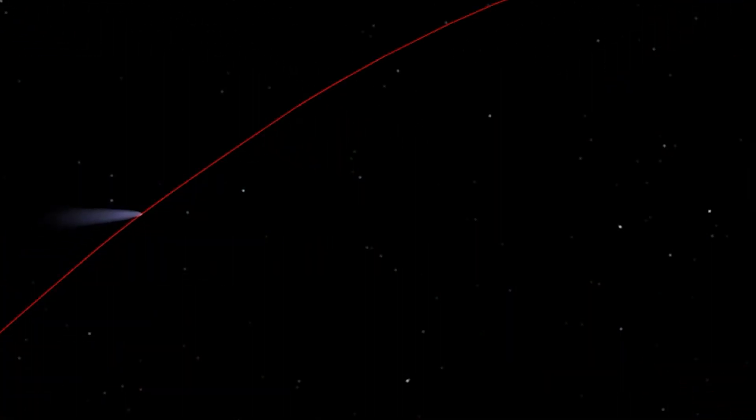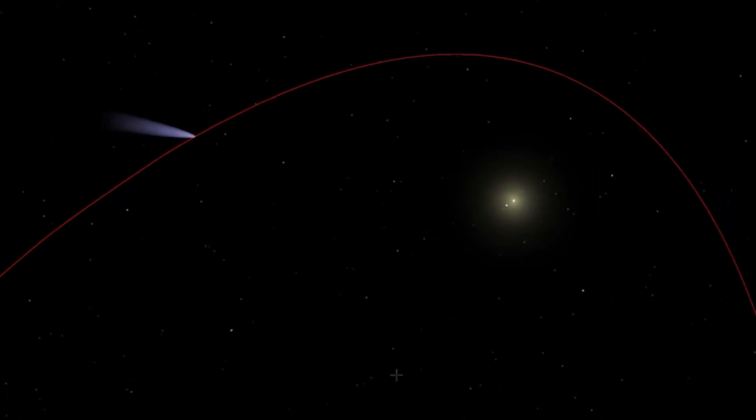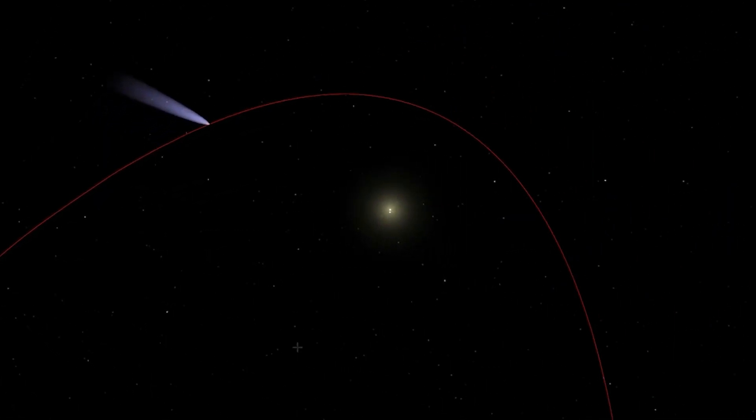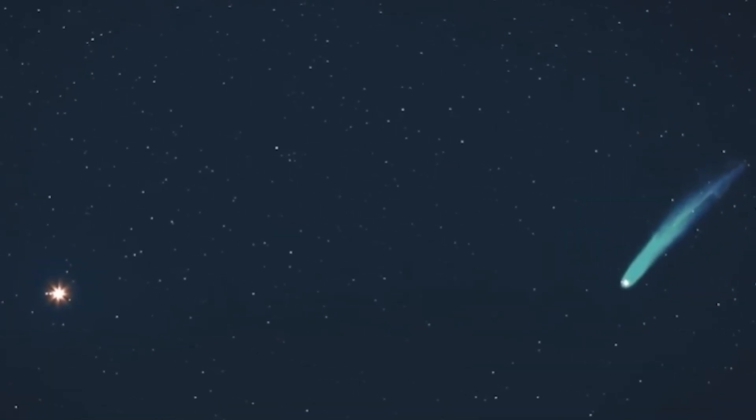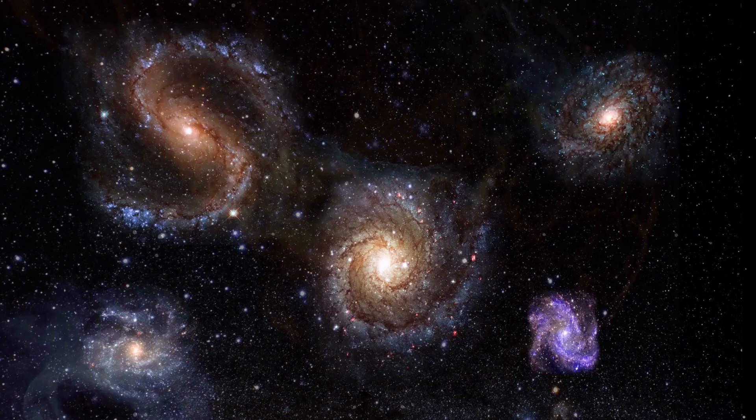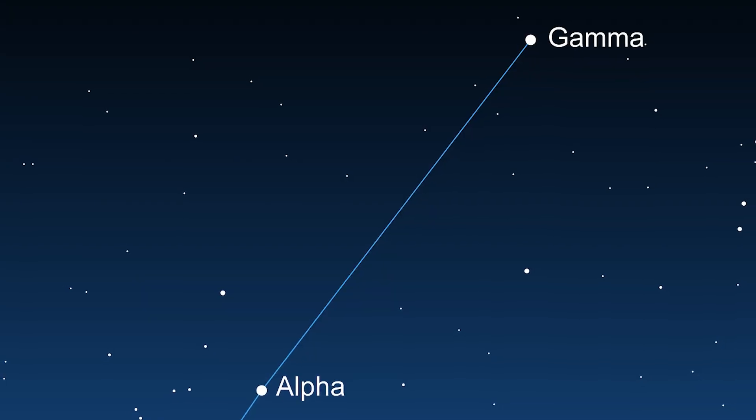Additionally, the comet's orbital eccentricity seems to be slightly above 1, hinting that it's likely a new visitor to our solar system from the distant Oort cloud. Once it reaches its closest point to the Sun, it's likely that the comet will be propelled out into galactic space, heading towards the southern constellation of Pyxis.